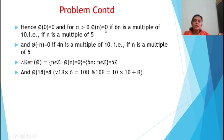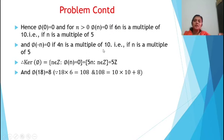Since phi is a homomorphism, phi(0) = 0 (the identity mapping). And phi(−1) = −6, which in positive form is −6 + 10 = 4. Phi(−2) = 4 +₁₀ 4 = 8. Phi(−3) = 4 +₁₀ 4 +₁₀ 4 = 12 mod 10 = 2, so phi(−3) = 2. In general, if n is a negative integer, phi(n) is the remainder obtained when 4|n| is divided by 10.